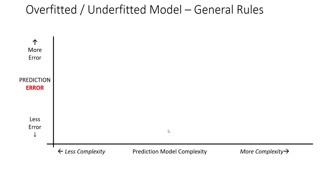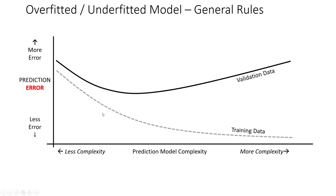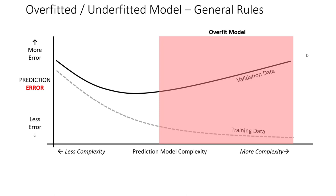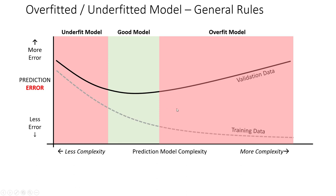On the y-axis we look at prediction error — going up means more error, which we don't desire; going down means less error, which we do desire. When building a prediction model using a training data set, you'll almost always see that as you add more complexity the prediction model has less and less error, approaching near perfect prediction. However, when you take that same model and apply it on a validation data set, you almost always see a U-shape: error decreases for a while but at some point the model becomes overfit and actually gets worse. On the right is the overfit zone; on the left is the underfit zone, where we could add more complexity and genuinely improve prediction.